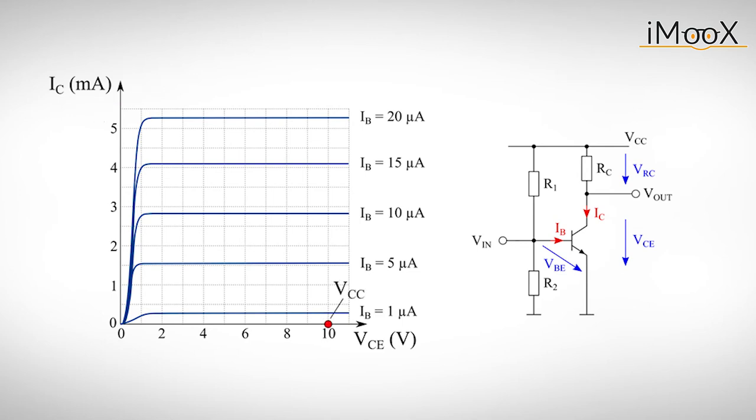If the transistor is switched off, which means that IB is basically zero, no current IC will flow and the output voltage will be the supply voltage VCC, which is represented by this point.